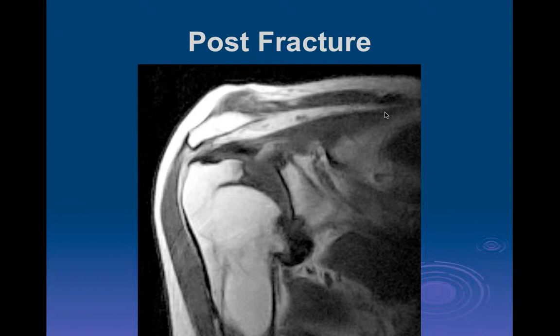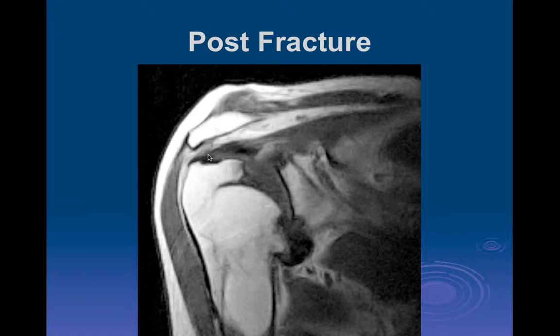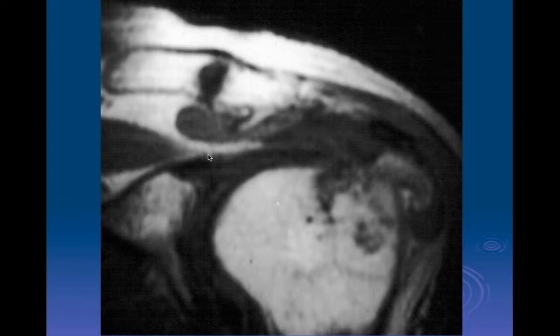Another form of impingement can occur after a fracture. A not-too-uncommon fracture is an avulsion fracture of the supraspinatus tendon attachment on the greater tuberosity. If it avulses and heals in an abnormal position, you can get a lot of bony deformity leading to abnormal mechanics. In this case, the humeral head is depressed due to abnormal bone fusion of the fracture fragment, which can lead to symptoms of impingement and abnormal function.